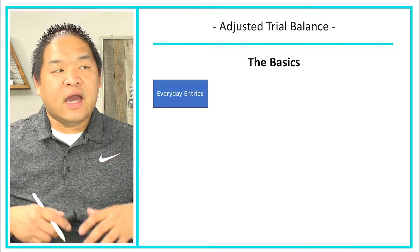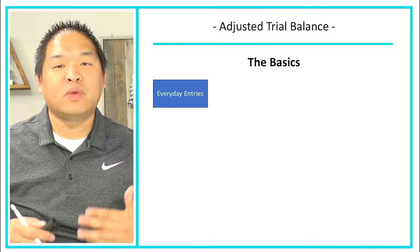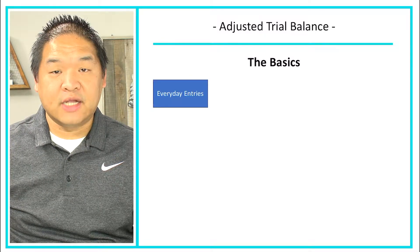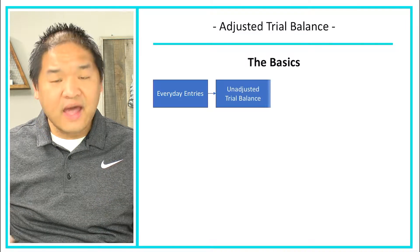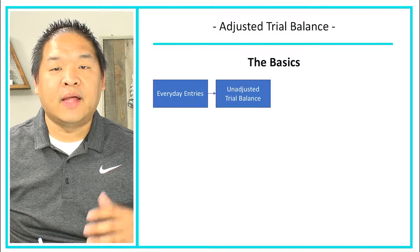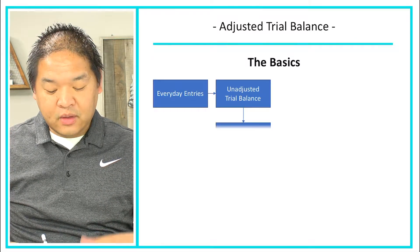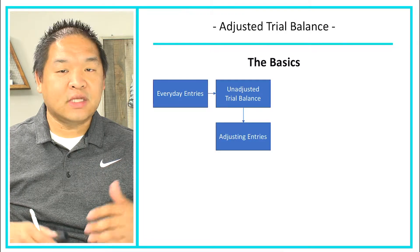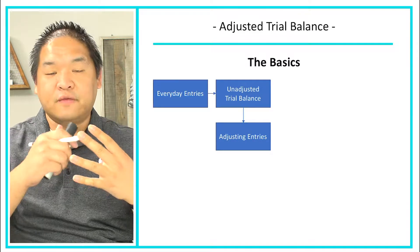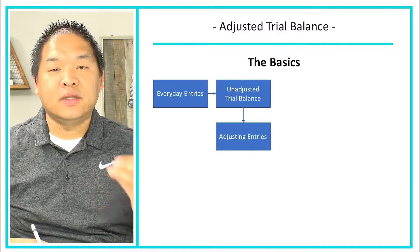Every day that we have transactions we book them into the general ledger. Then at the end of the period we prepare what we call the unadjusted trial balance, like we did in the last section. From there we do adjusting entries — the two deferrals and the two accruals for both revenues and expenses. That's what we cover in this section.